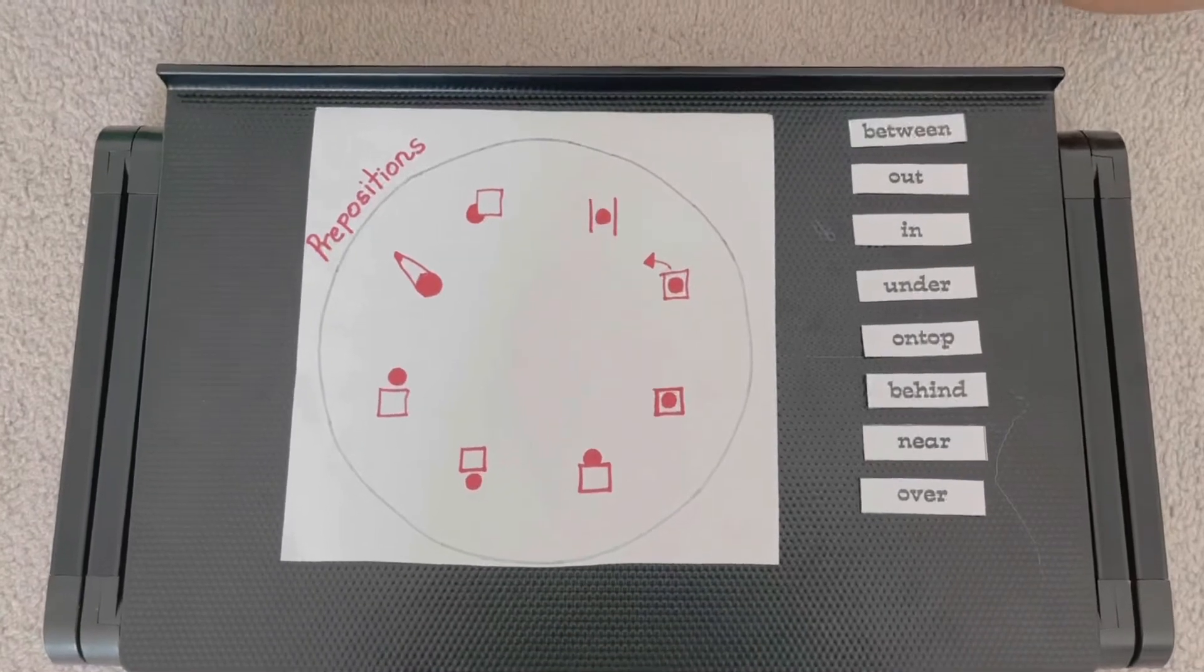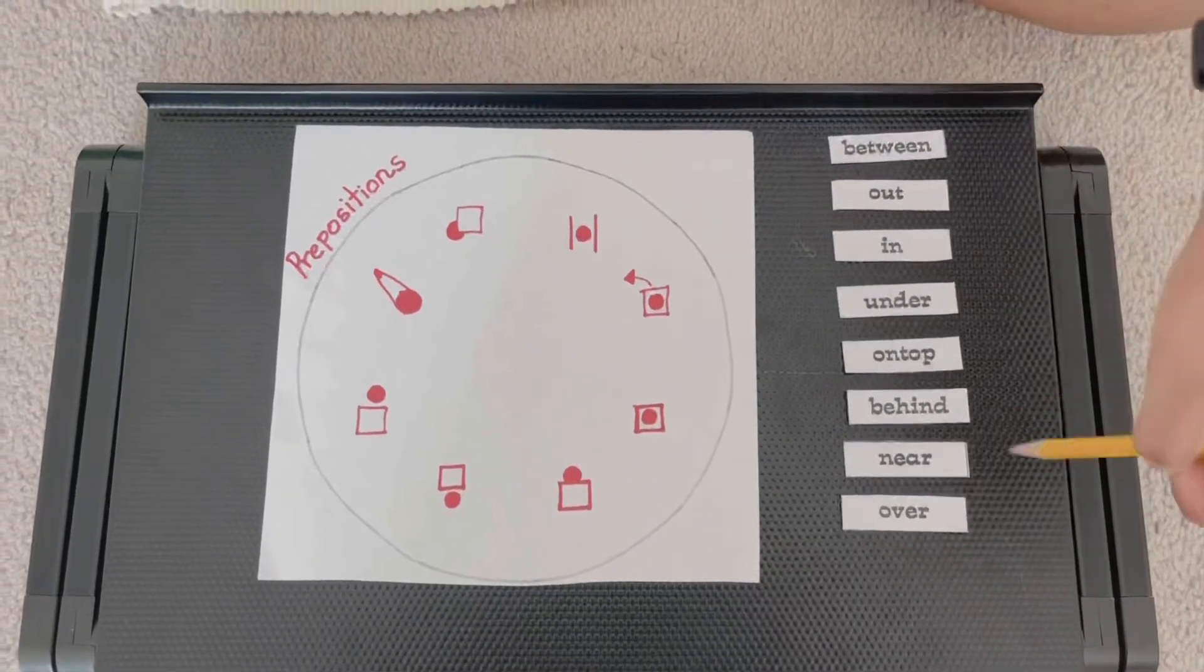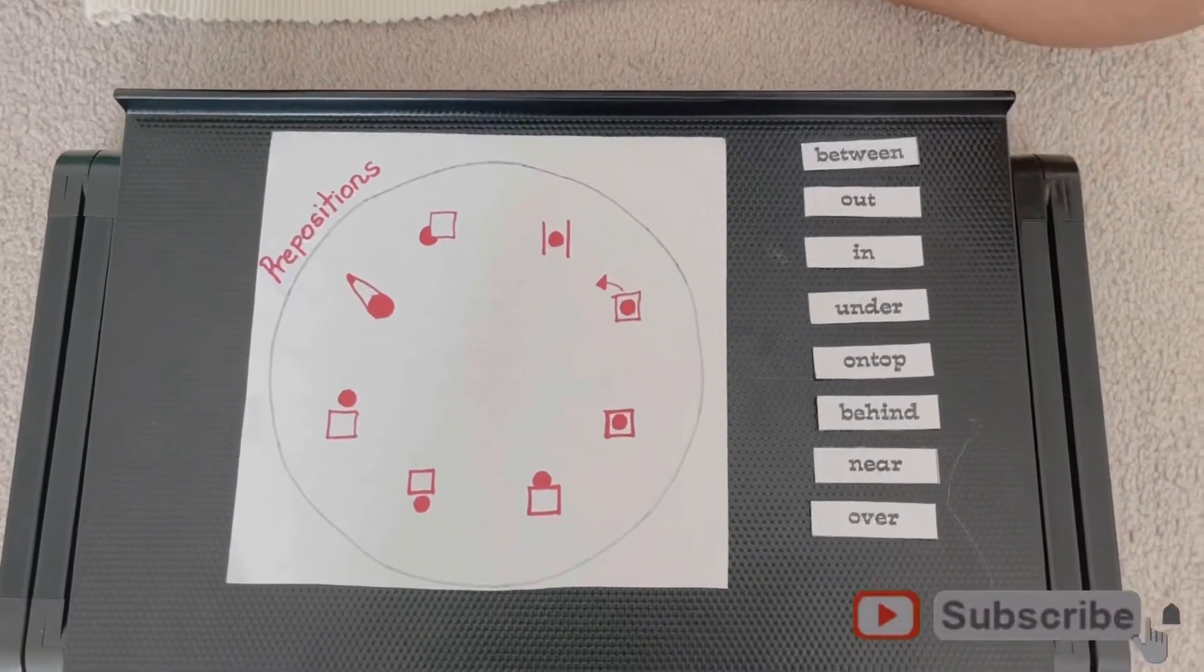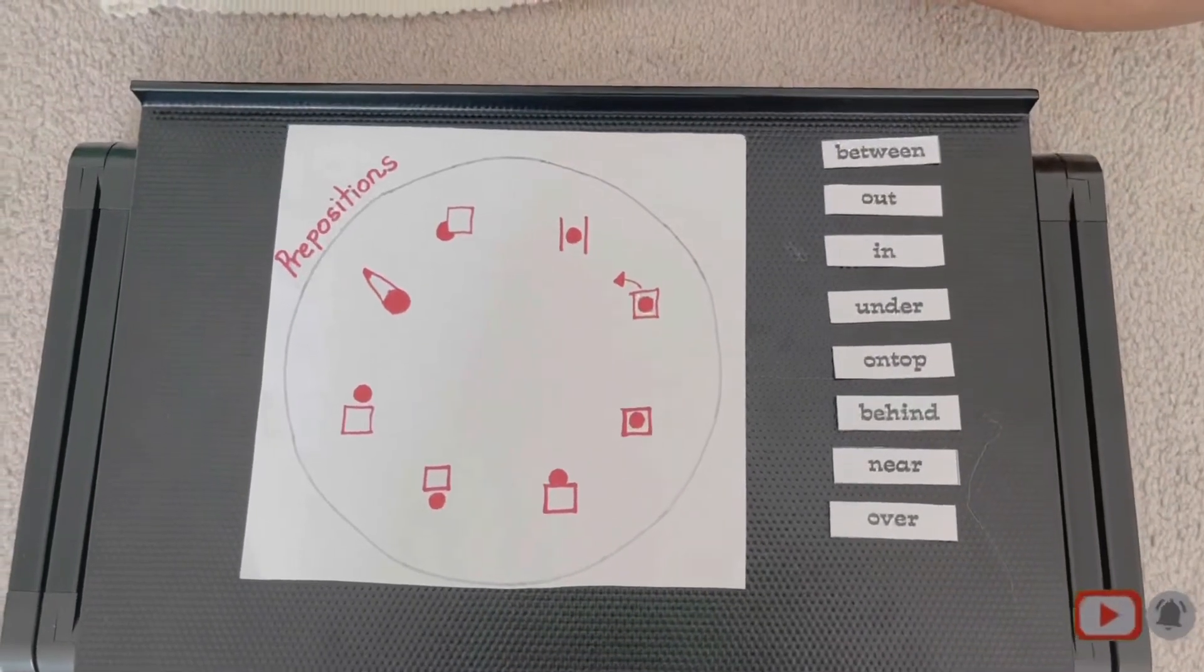The second step is you take a separate piece of paper and then you write these different words: between, out, in, under, on top, behind, near, and over. You just cut them out and then we'll start the lesson.